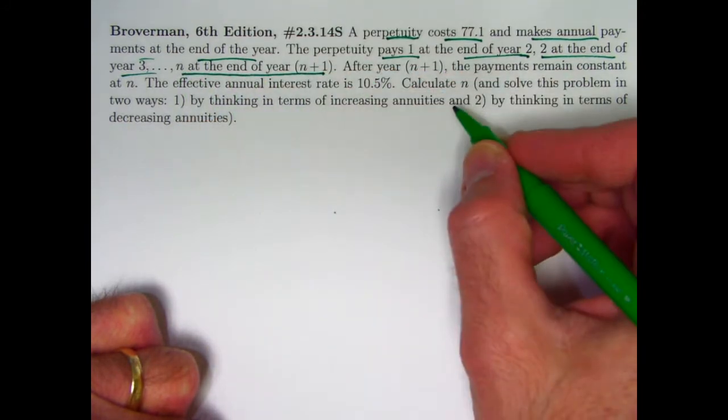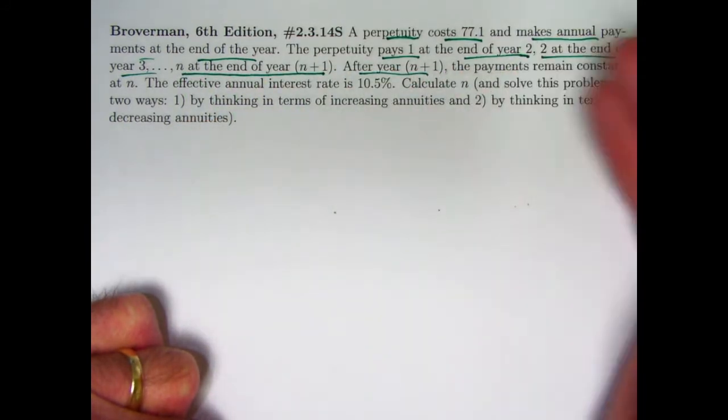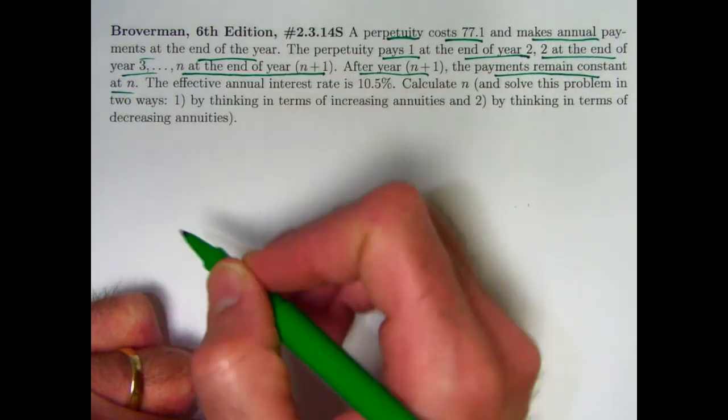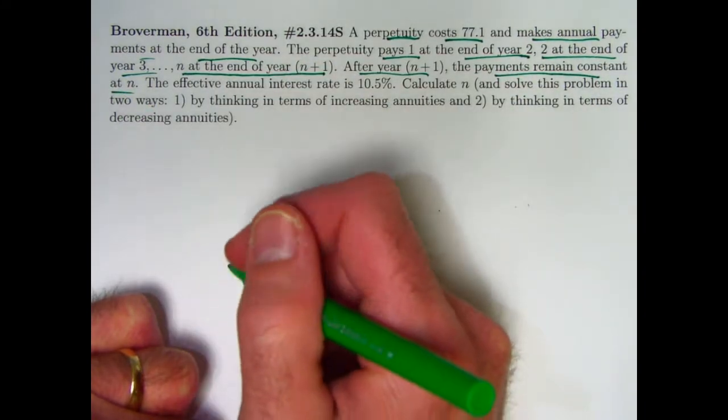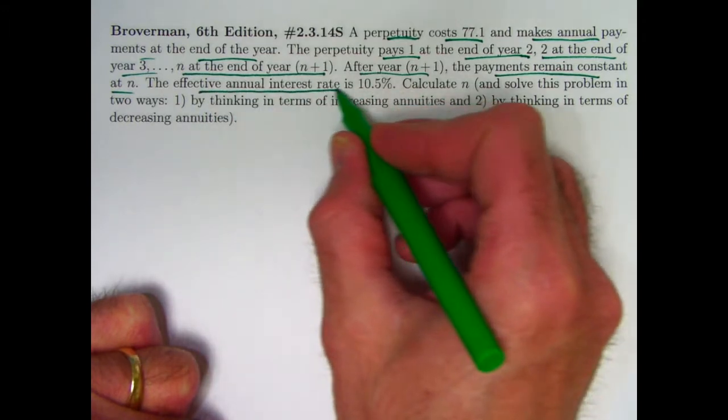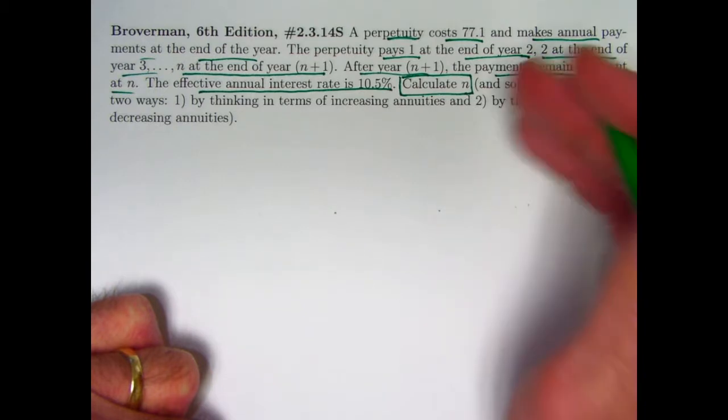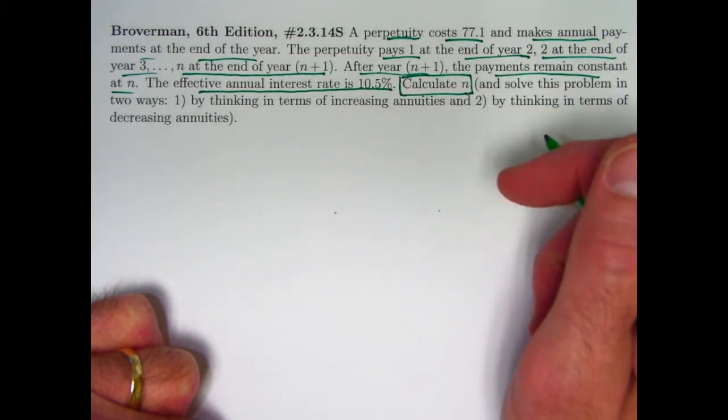N at the end of year N plus 1, and then after year N plus 1, starting at N plus 2, the payments remain constant at N, the same as the payment at time N plus 1. The effective annual interest rate is 10.5%. Calculate N, the ultimate payment, the ultimate constant level payment for this perpetuity.